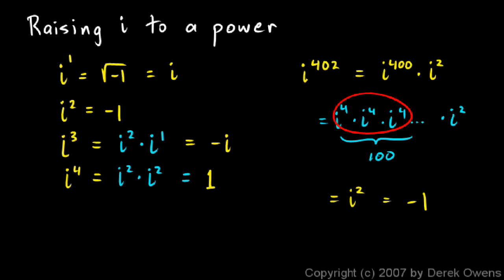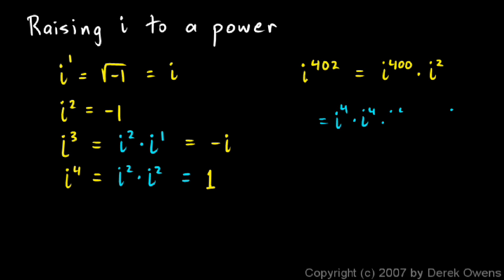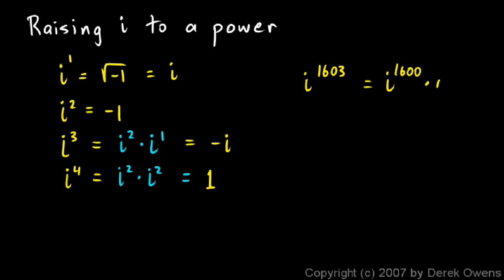So anytime you're trying to raise i to a power, even if it's a really big number as the exponent, you can just get rid of all the multiples of 4 in there and see what's left. Suppose you were told to find i to the power of 1,603. Just realize that this is i to the 1600 times i to the 3. The 1600 is a multiple of 4, so all of that works out to 1. So this is 1 times i cubed, which is just i cubed. And remember i cubed is the same thing as negative i — so this simplifies all the way down to negative i.